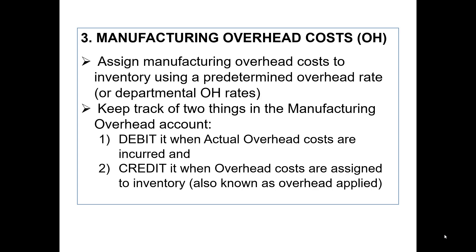Now, manufacturing overhead costs. You learned previously that we use a predetermined overhead rate to assign cost to inventory. The manufacturing overhead account is used to keep track of two things. You will debit overhead when actual overhead costs are incurred — so if factory supplies are used, if a factory maintenance worker is paid, or if factory utilities are paid, debit manufacturing overhead. You will credit this account when costs are assigned to inventory, also known as overhead applied.